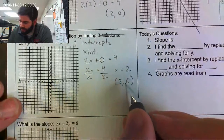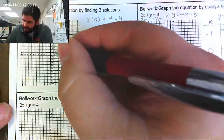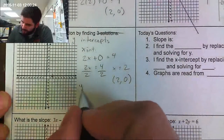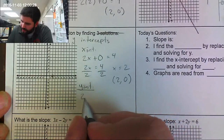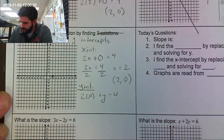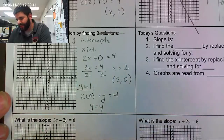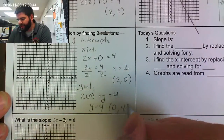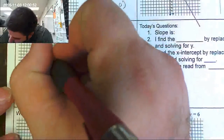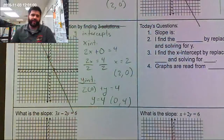I plot that point: 2 and 0 is right here, which also matches an ordered pair from method one. Now finding the y-intercept by plugging in 0 for x: that gives me y equals 4, so the ordered pair is 0 and 4, which also matches what I found earlier. I plot 0 and 4, connect the two points, and there's my graph.